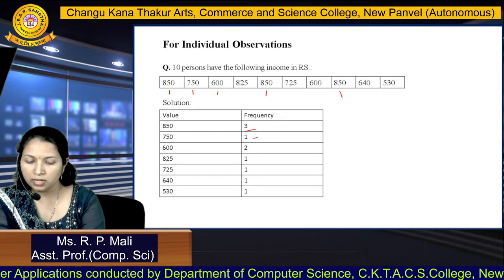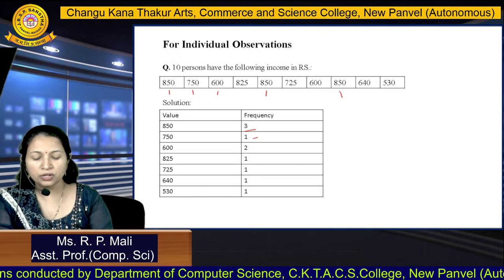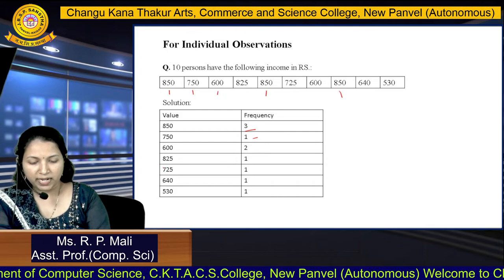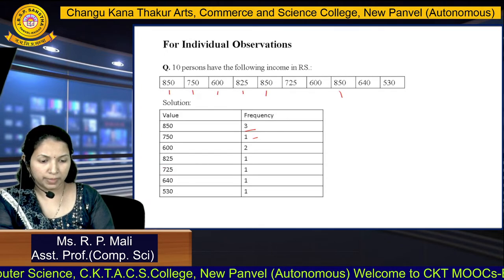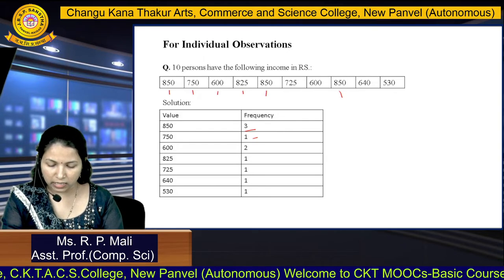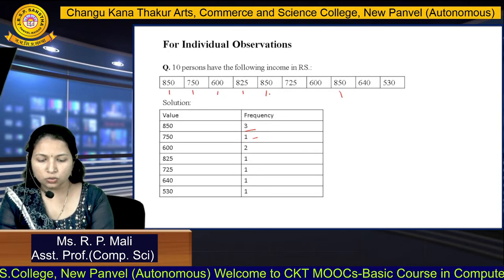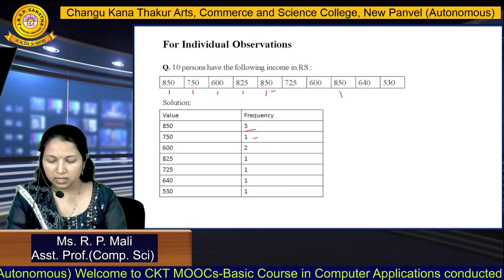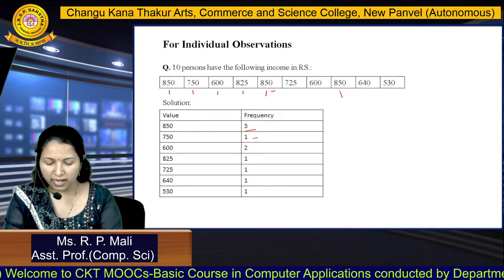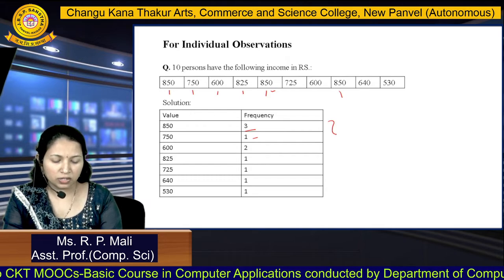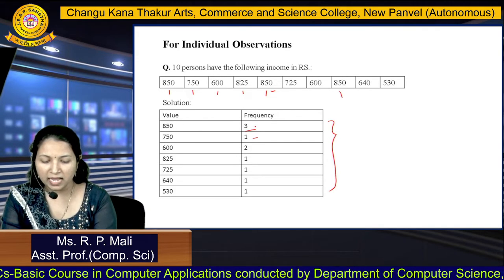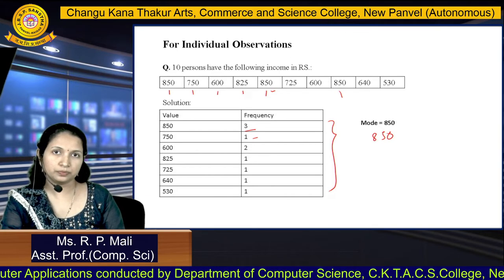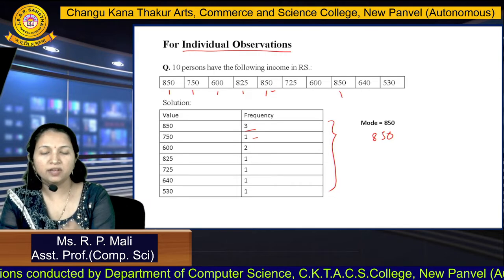The next value is 600, which occurs two times, so we write two. 825 is the next number, which occurs only one time. Then 725 occurs once, 640 occurs once, and 530 occurs once. It is clear that 850 has the highest frequency, so you can consider 850 as your mode. This is for your individual observation.